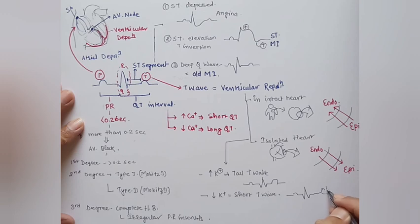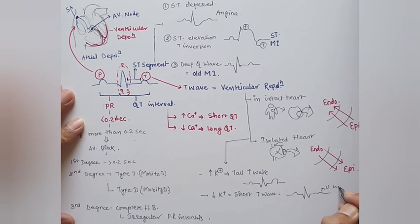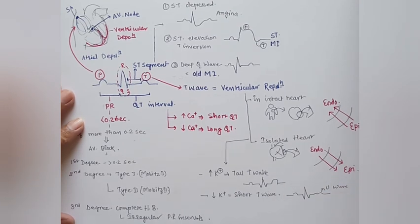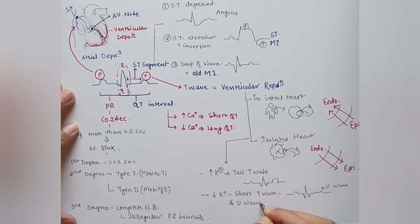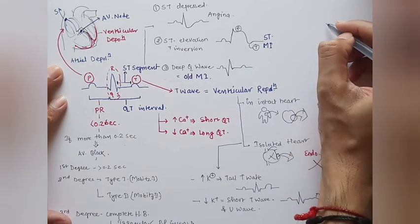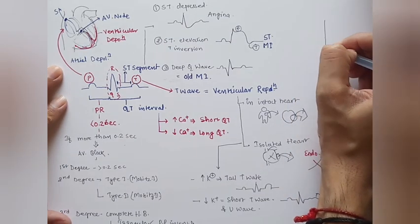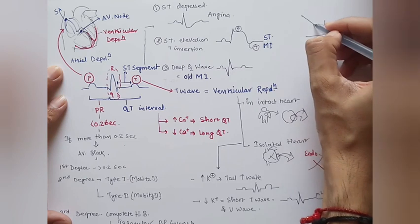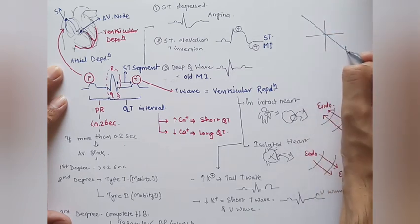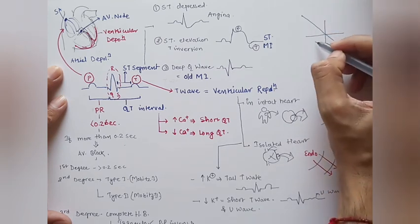We may also see a U wave, which is a distinct type of wave specifically seen in cases of hypokalemia. These were some important ECG facts which are asked in exams and in NEET MDS.